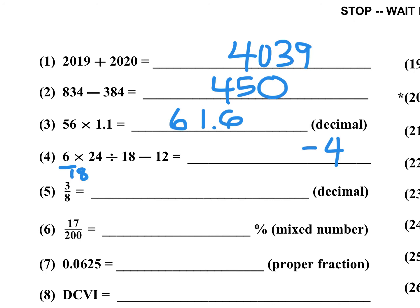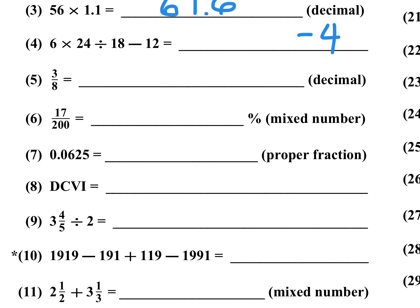Number 5: 3/8 equals what decimal? 3/8 is 0.375, and you should memorize that. Note: if you were to put a zero at the end — 0.3750 — that would be counted wrong as an extraneous zero. So 0.375 is the only correct answer when the answer is required as a decimal.